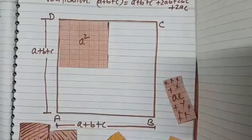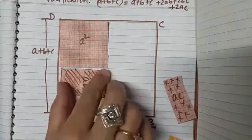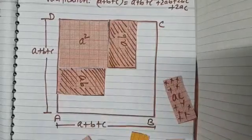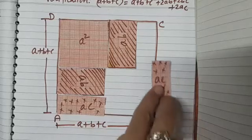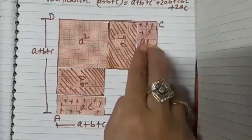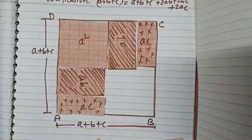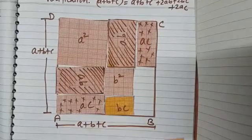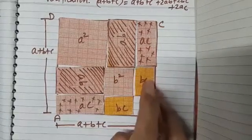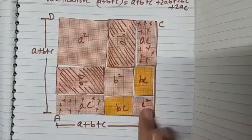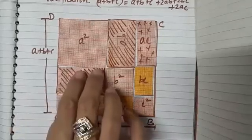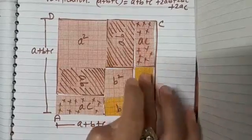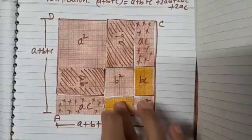So here I have placed A², then AB, then another AB. This is AC, let me place this AC. Okay, let us try this B². This is BC, this is BC, and this is C². So you can see that these nine pieces completely cover the square